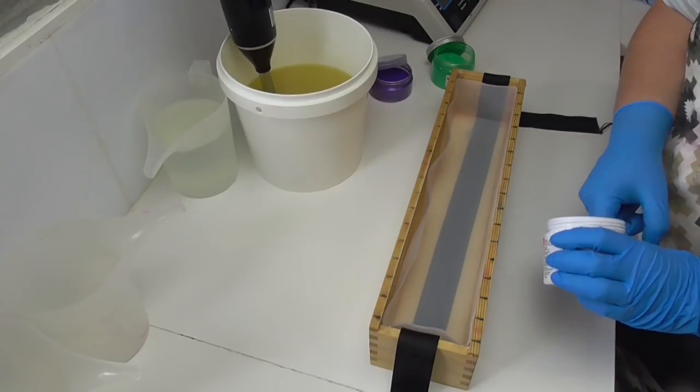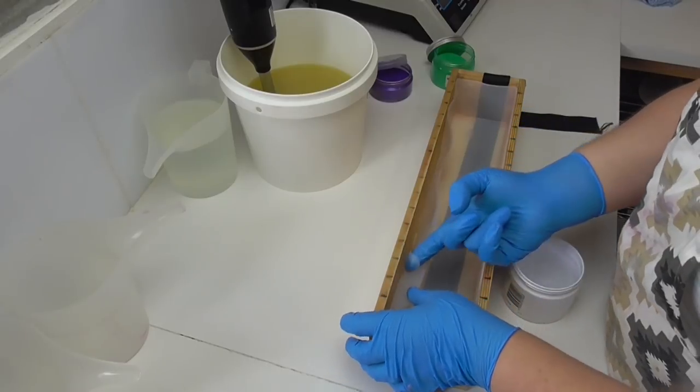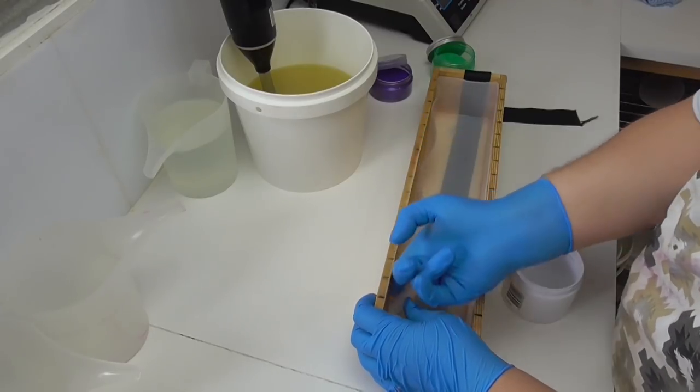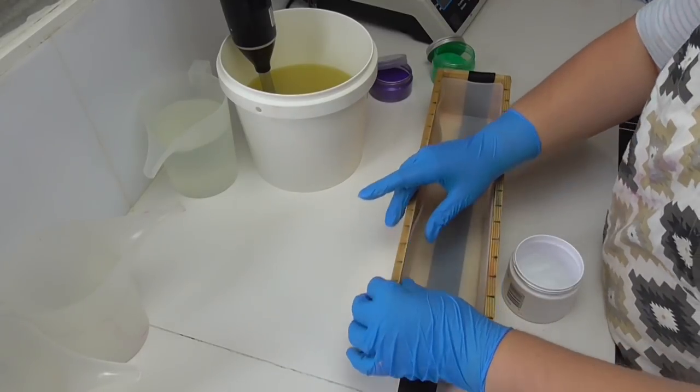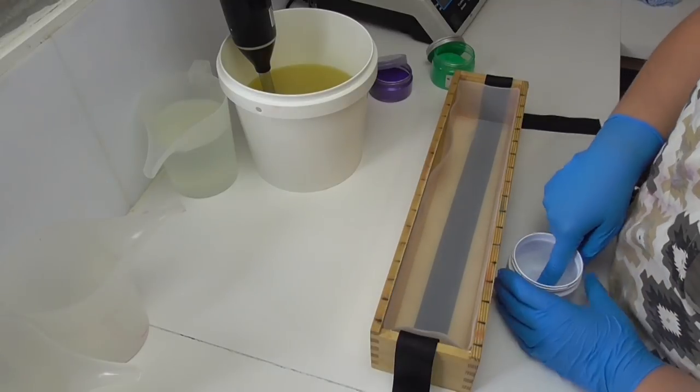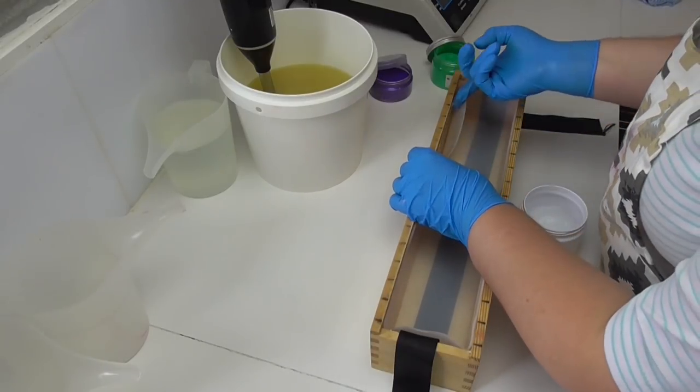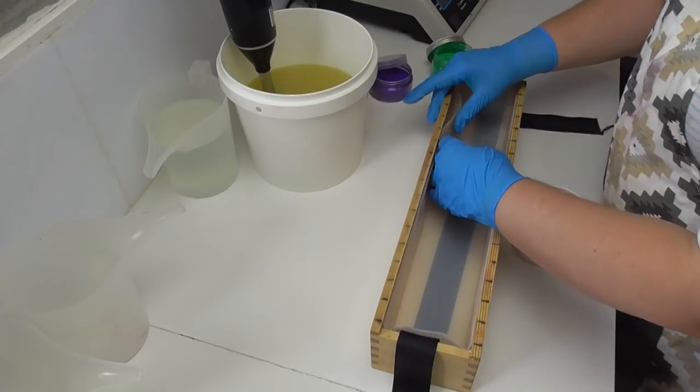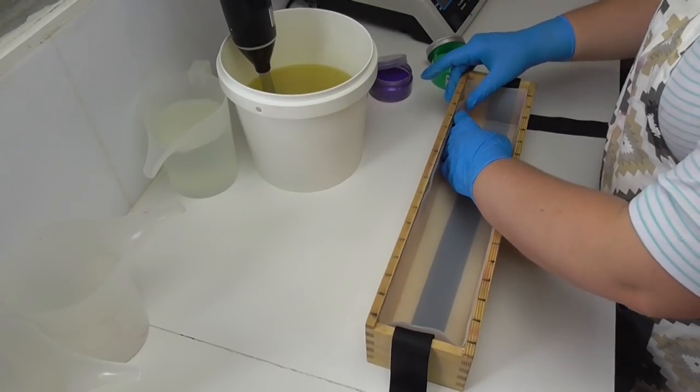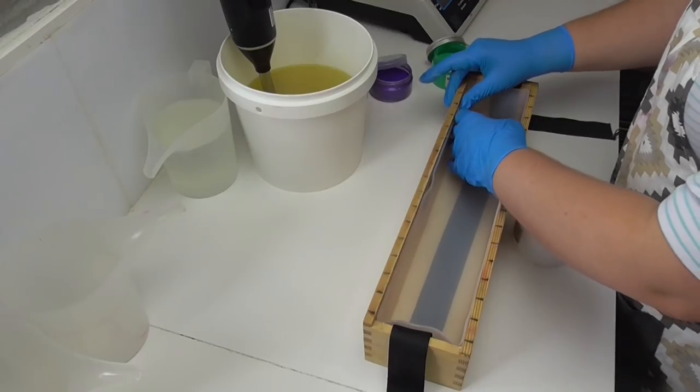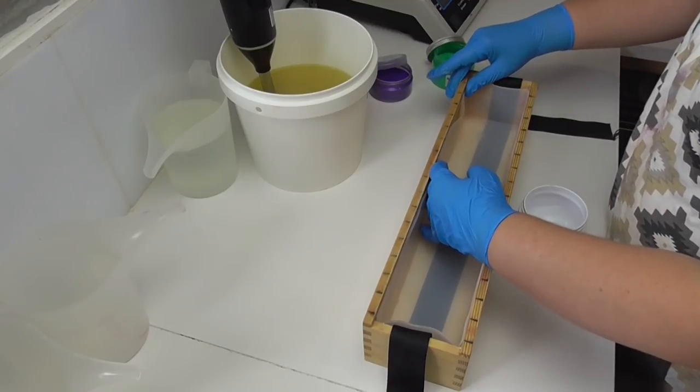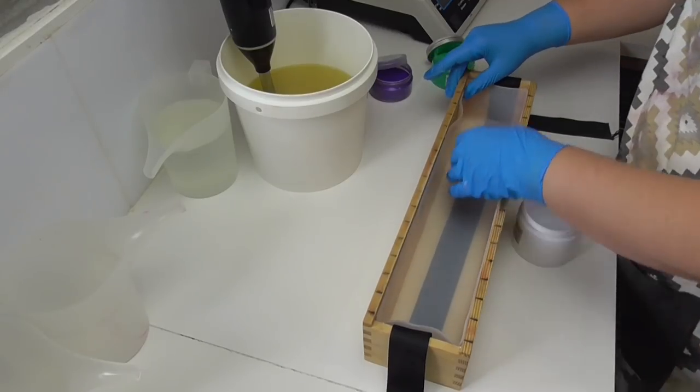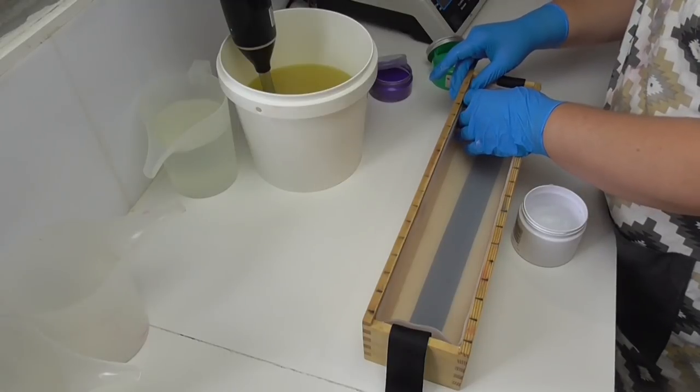I'm just prepping my soap mold here. I get these from eBay and I leave the link down below. All I'm doing with my silicone liner is putting a little bit of petroleum jelly along the edge of the box, which holds my mold in place while I pour the soap.